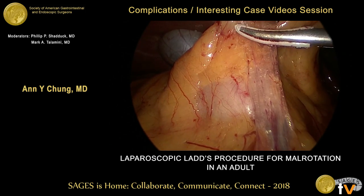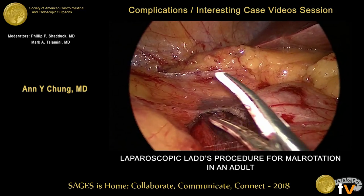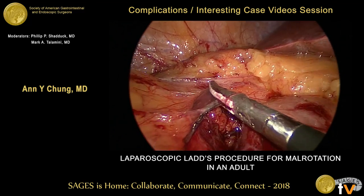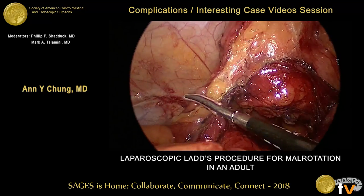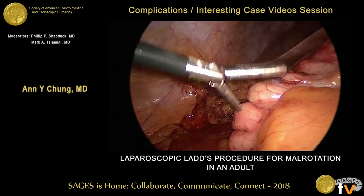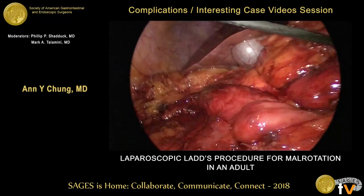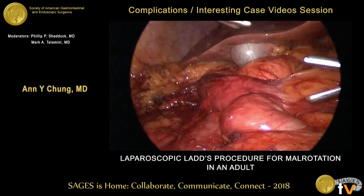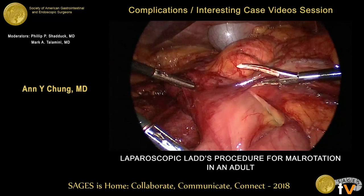We then completed the mobilization of the right colon by opening up the gastrocolic ligament at the mid-transverse colon and divided it proximally towards the hepatic flexure. Once the right colon was completely mobilized, we were able to flip it over medially and expose the entire duodenum as well as the head of the pancreas. There are more adhesions of the duodenum to the mesentery and these were taken down again with a combination of blunt and electrocautery dissection.